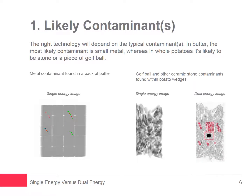Dual energy is also adept at detecting inorganic foreign bodies such as flat glass, bone, stones, rocks, low-density rubber, and some plastics in heterogeneous products. It does so by removing the busy product image, leaving only the inorganic contaminants. For example, it is much easier to see the wedge-shaped golf ball contaminant along with other contaminants in the dual energy image than in the single energy image.